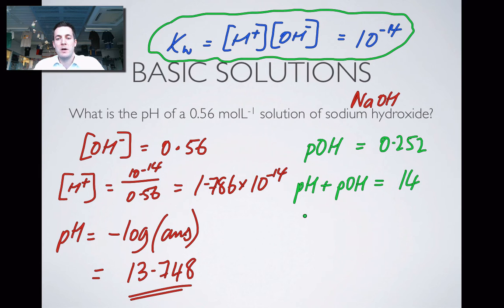So in other words my pH will be equal to 14 minus the pOH, which was 0.252, and that equals 13.748. So that's just another way of arriving at the answer. Which way you do it is up to you. You just have to be sure that you understand what you're doing.